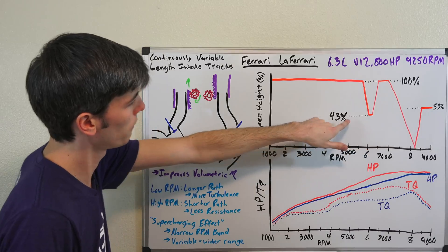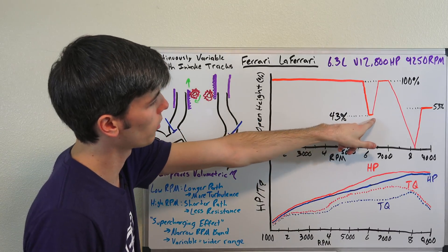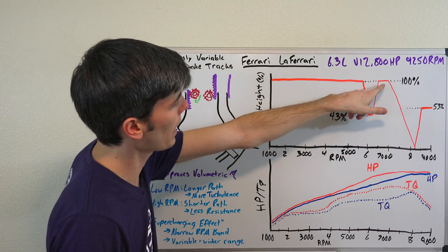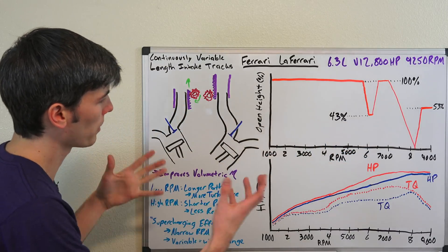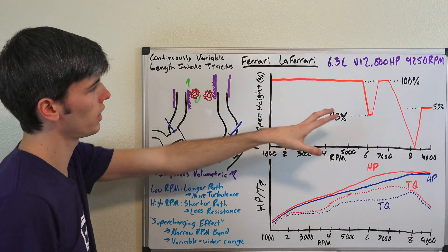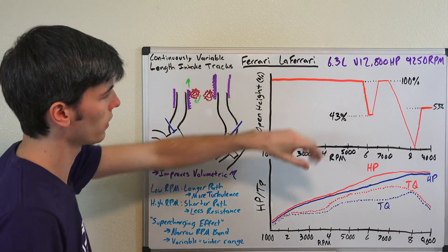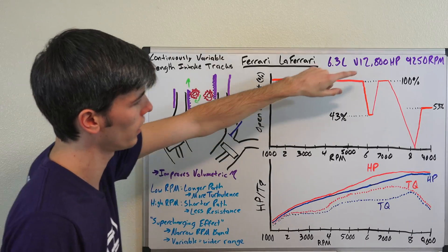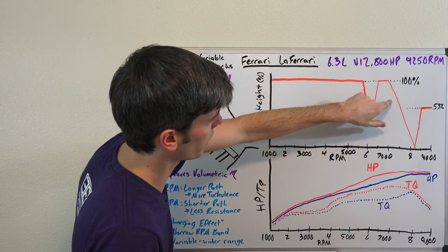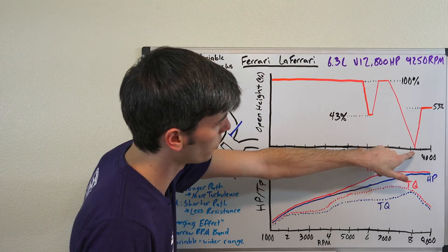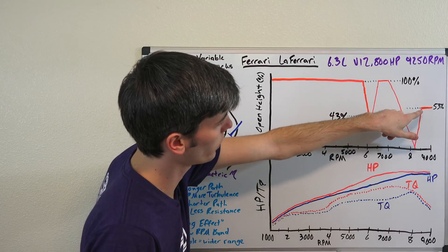They found that to be the ideal range for that to be at. Then it pops back up to 100%, something happening there with that resonant frequency where you're just optimizing the airflow, increasing the volumetric efficiency. Then it drops all the way down starting at 7,000 RPM to 8,250 and then at about 8,500 it pops up to 53% and stays there for the rest of the duration.